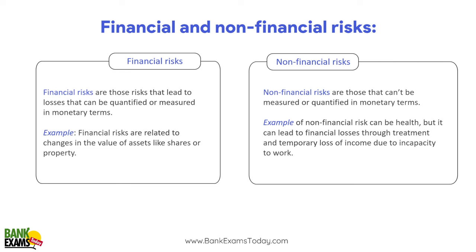Financial and non-financial risk. Financial risks are those that lead to losses that can be quantified in monetary terms. For example, motor insurance — if an accident happens and the car is fully damaged, you can quantify that loss: if the car's depreciable value was 5 lakh rupees, that's a financial loss. Non-financial risks are those that cannot be measured or quantified in monetary terms — like the health of a person or the emotional damage to a family when someone dies. The insurance company can provide a claim, but the emotional loss cannot be compensated.